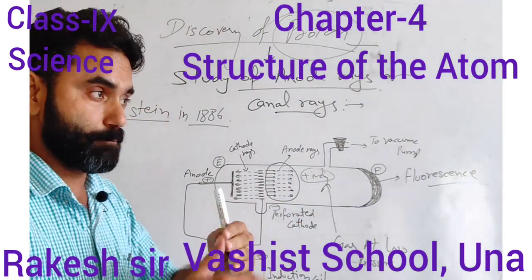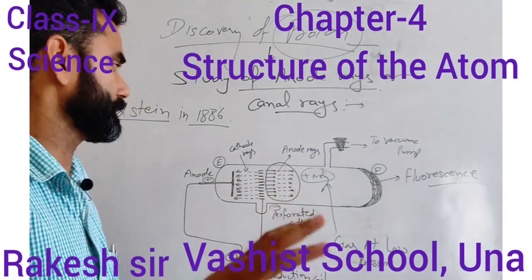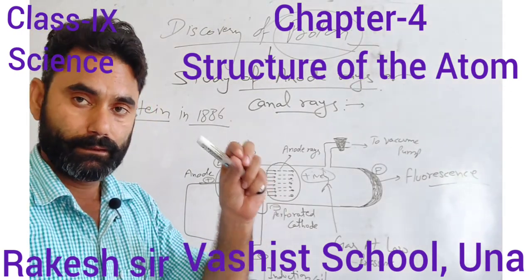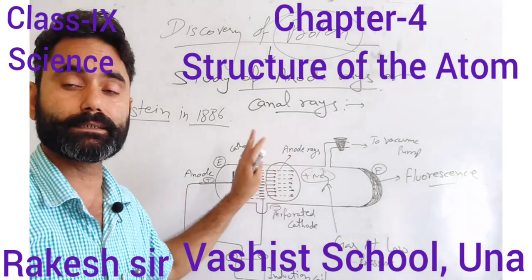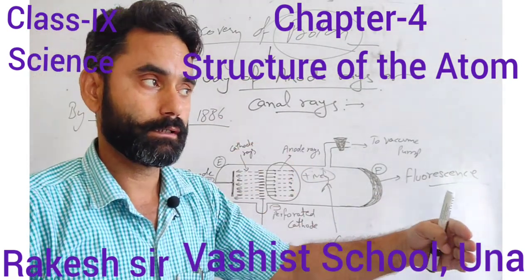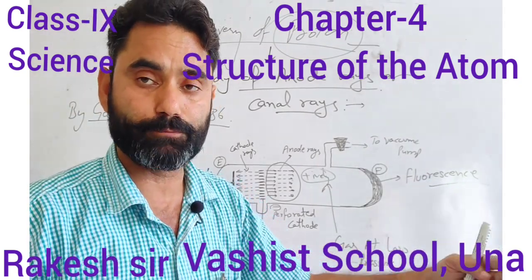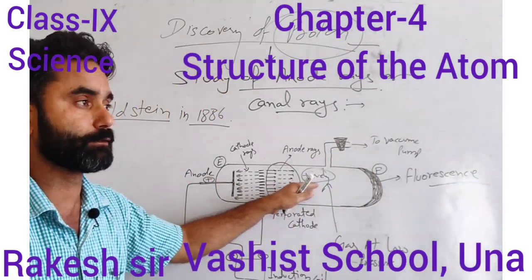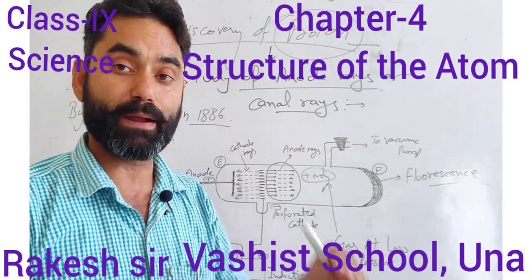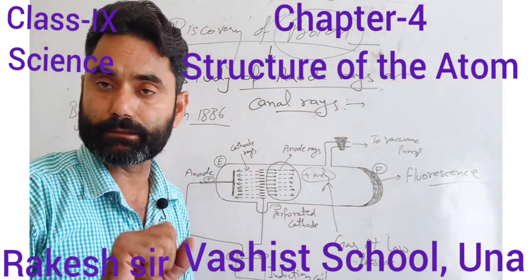When we study the properties of these anode rays, their properties are very similar to those of cathode rays, except in respect of their charge. These particles get attracted towards the negative terminal of the external electric field, confirming they consist of positively charged particles.